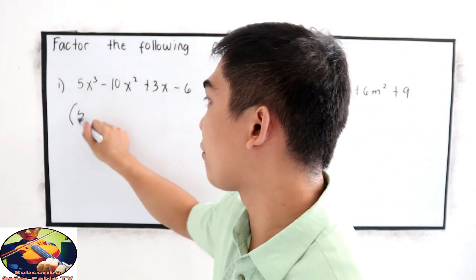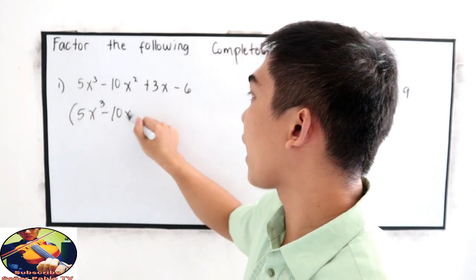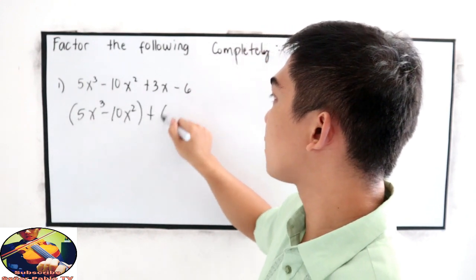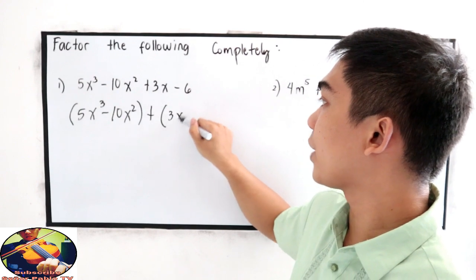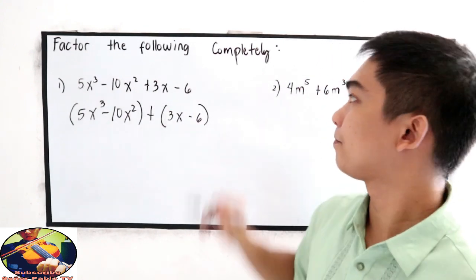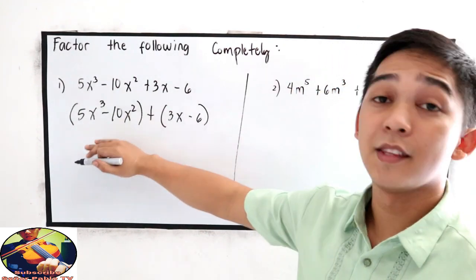Group of 5x cubed minus 10x squared plus group of 3x minus 6. This time, get their greatest common factor.